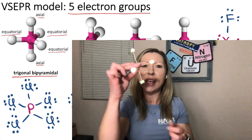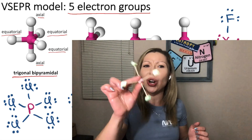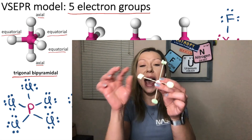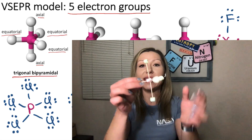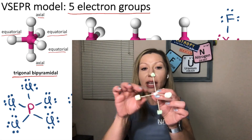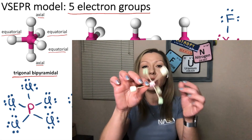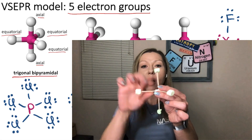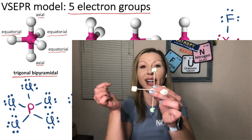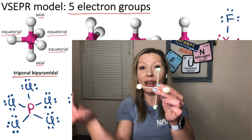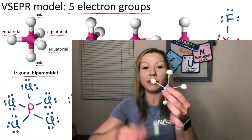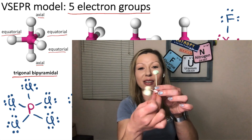I hope this makes sense. Make some marshmallow structures for yourself so it's going to be easier to see. Now, which of these atoms will get replaced when we have a lone electron pair? It's pretty simple — when we have an electron pair, we are going to remove one of the equatorial atoms, and that will give us a seesaw structure.